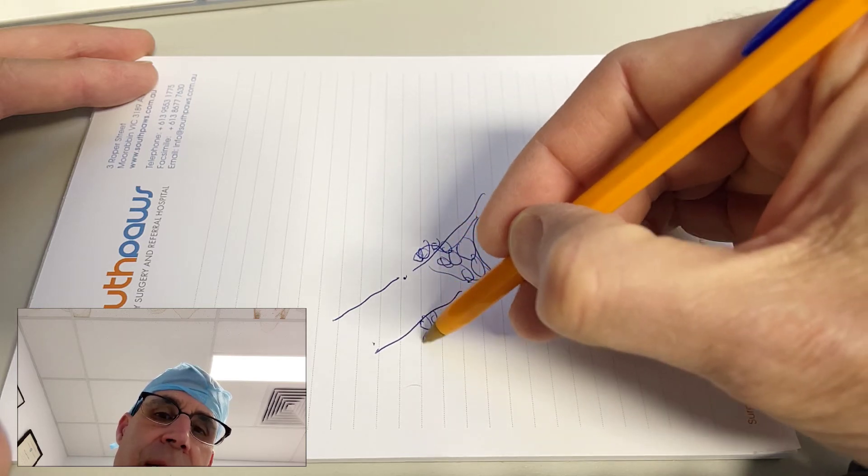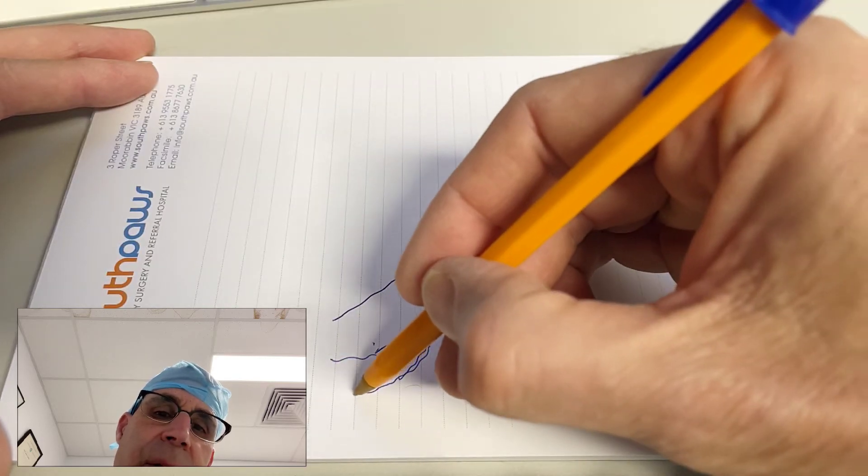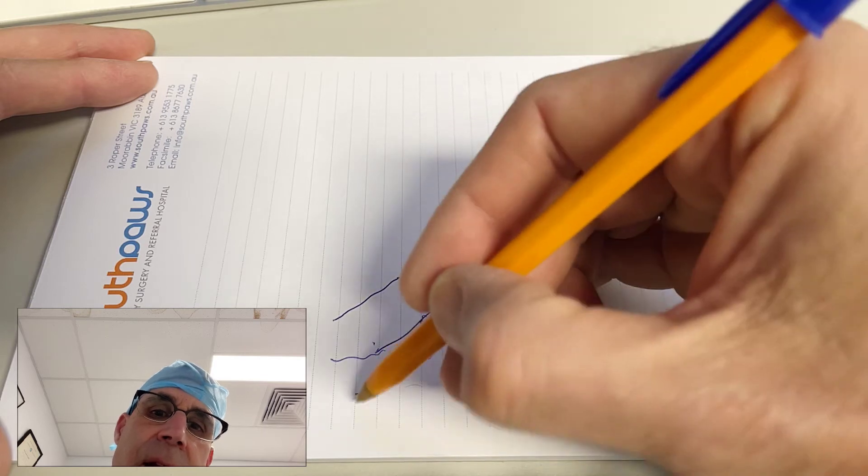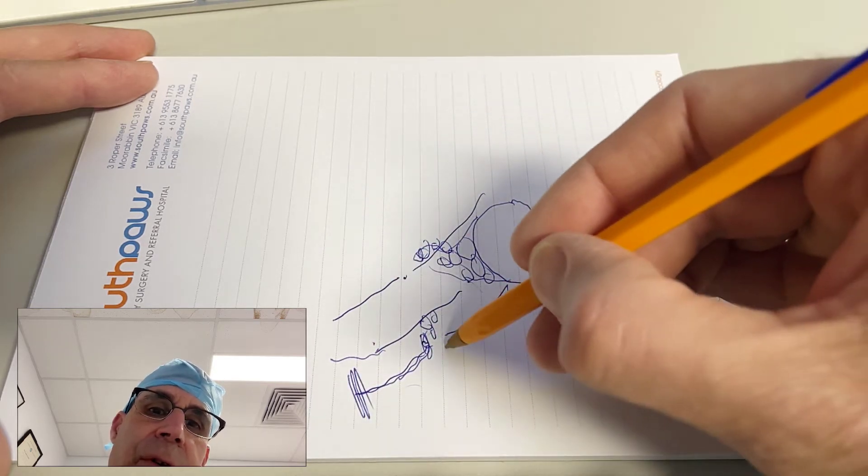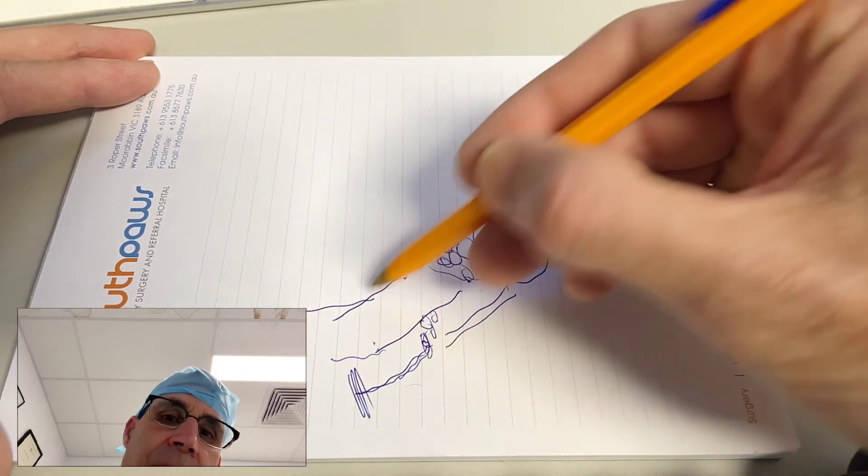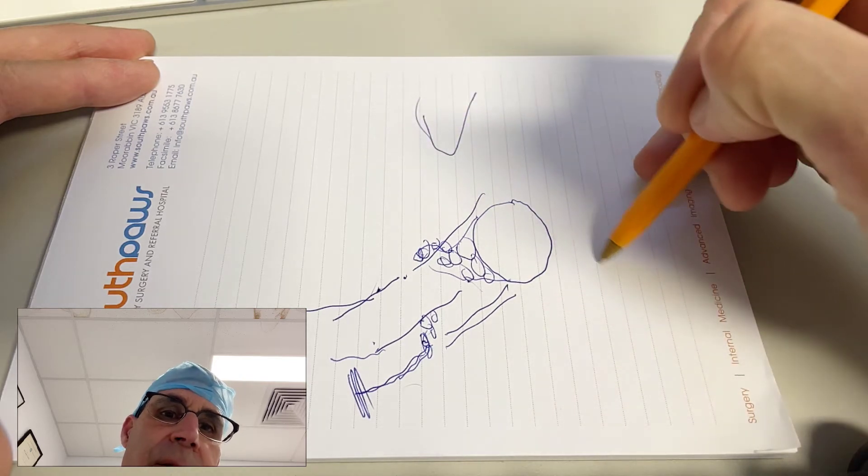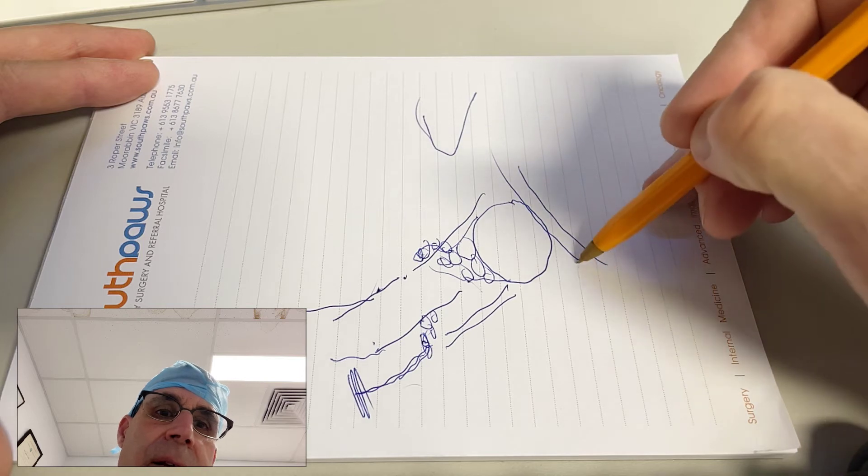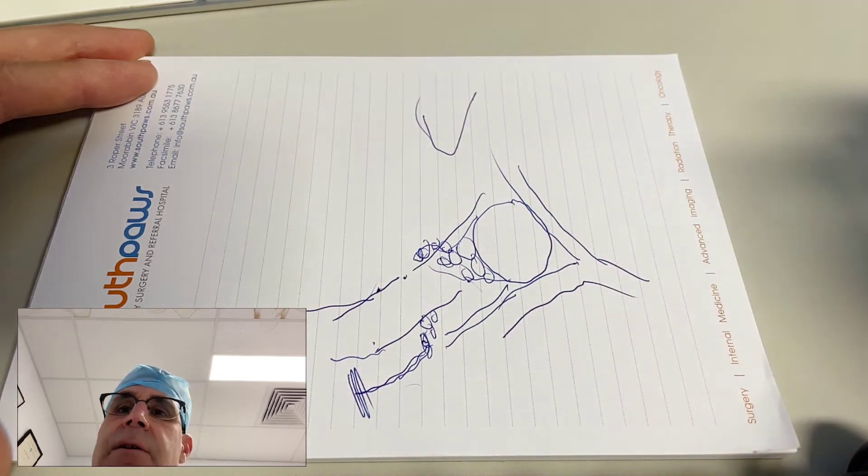The lingual nerve is traveling across here, the hypoglossal nerve is right here, and this is the ramus of the mandible right here. The ear is going to be in this location here. The maxillary and linguofacial branches of the jugular vein are here and here.